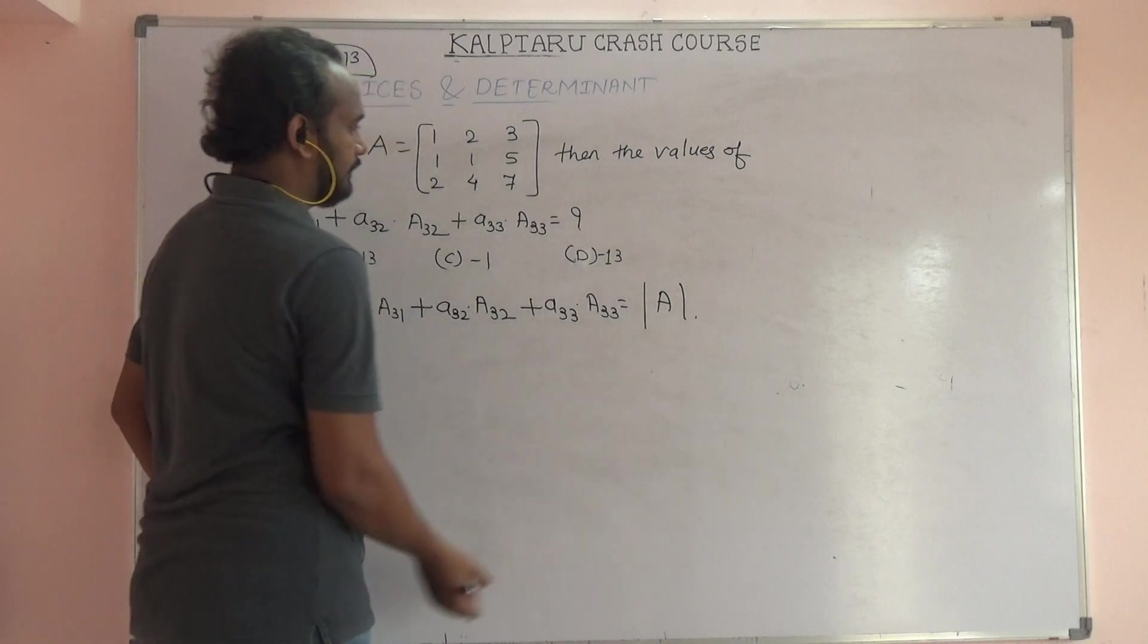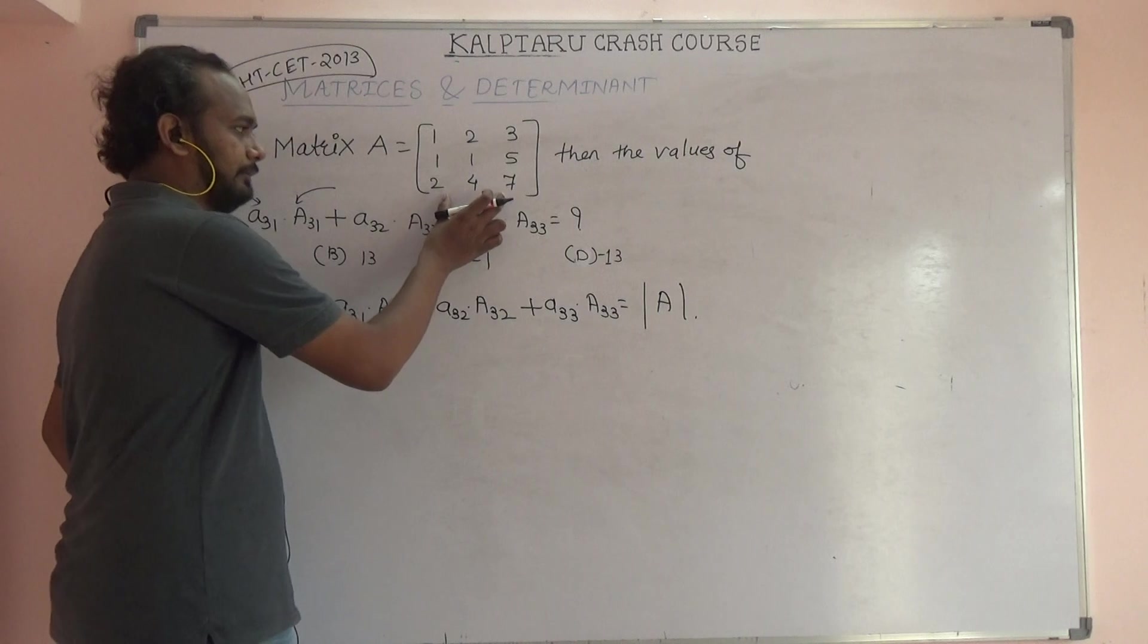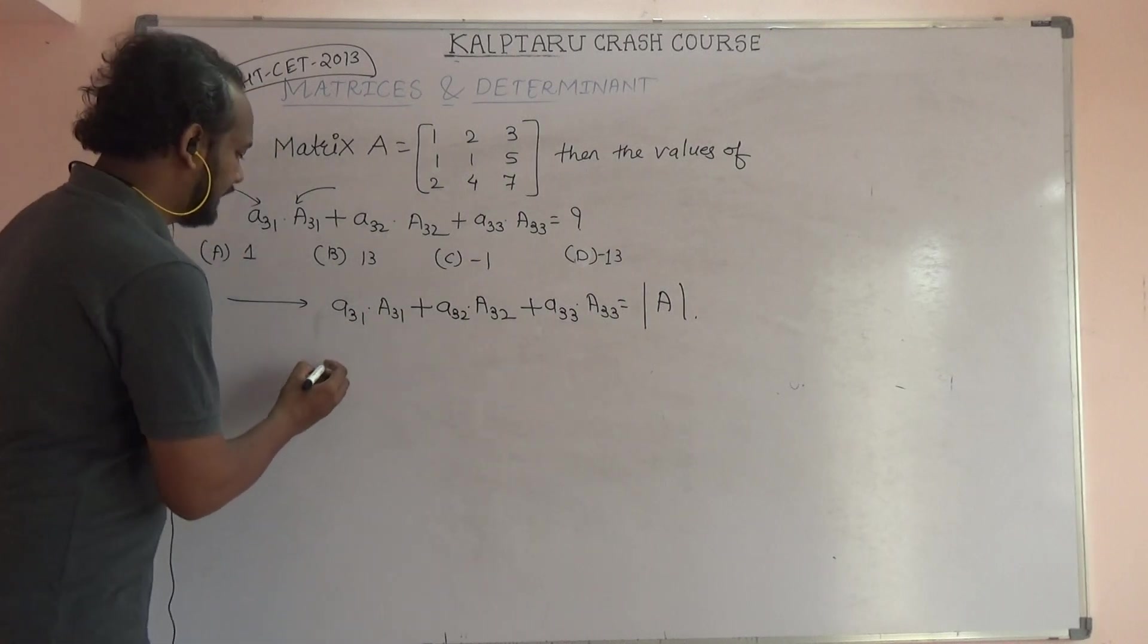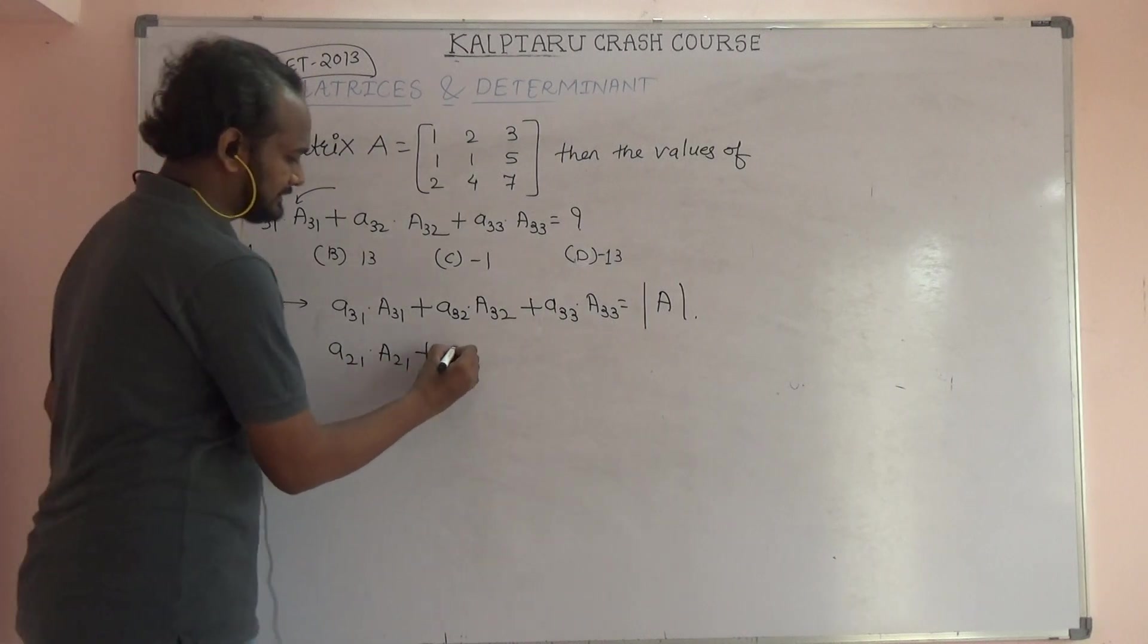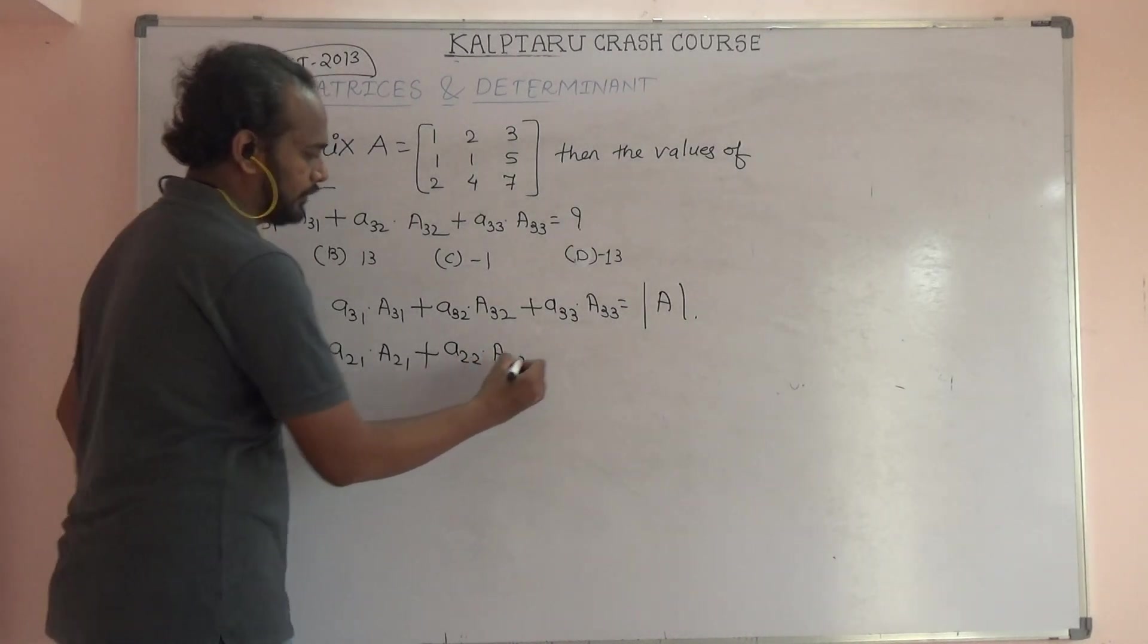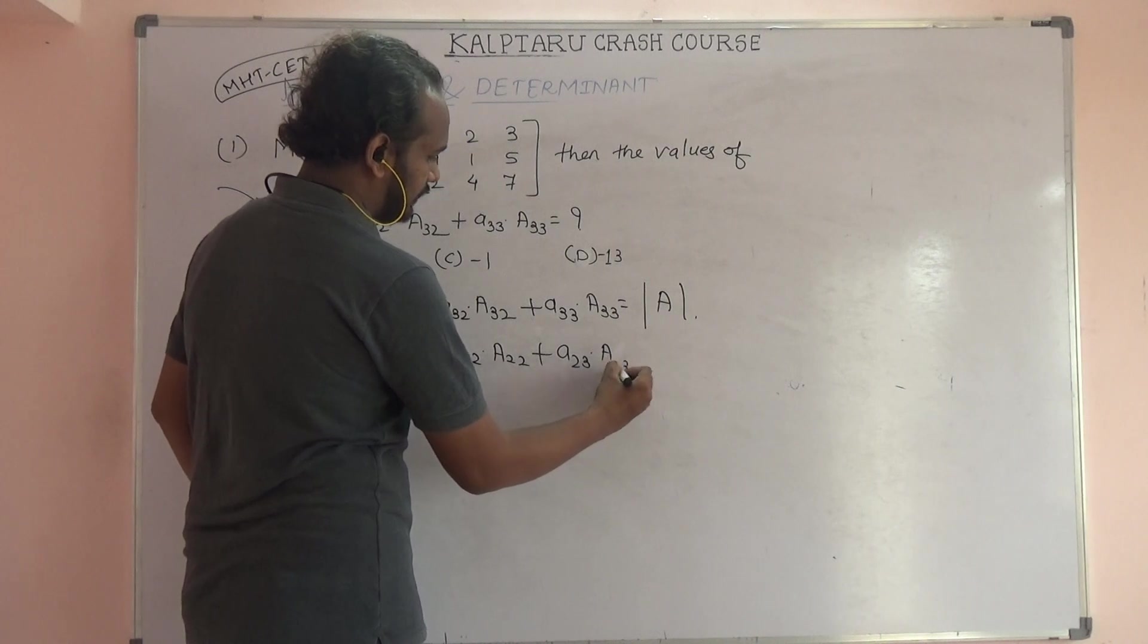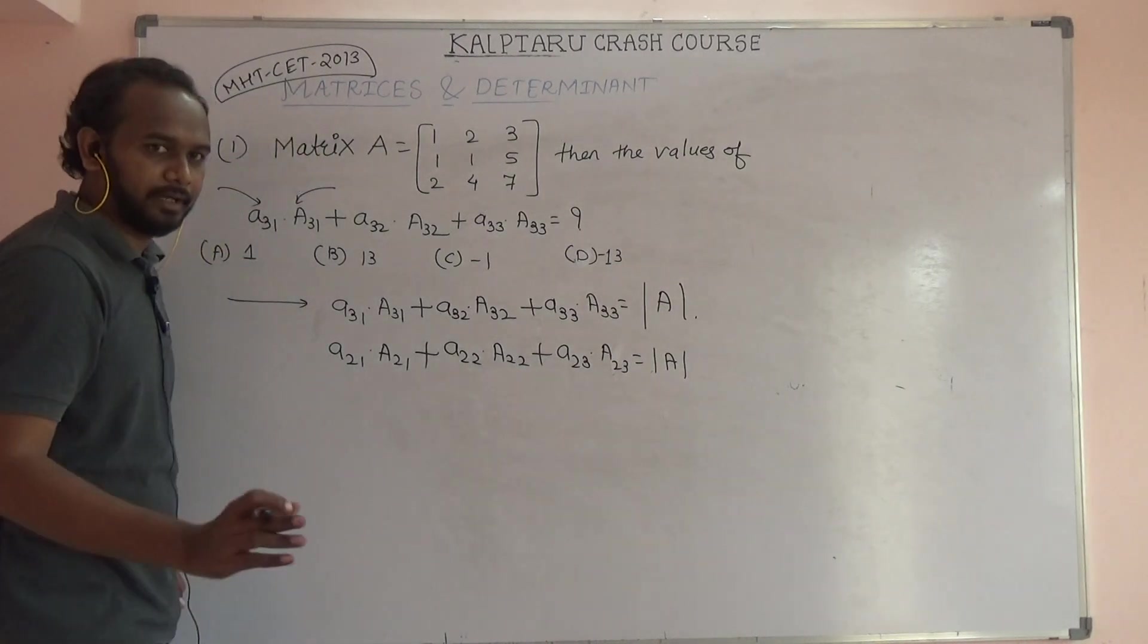That is determinant of A only. The answer will be the determinant of this matrix A. Similarly, sometimes a different problem is asked: find a21 into cofactor of a21 plus a22 into cofactor of a22 plus a23 into cofactor of a23.